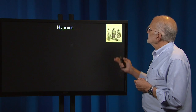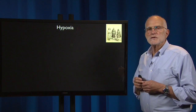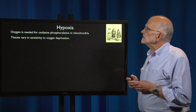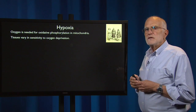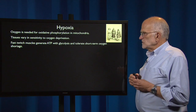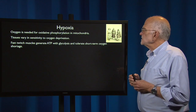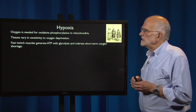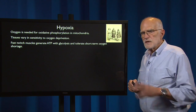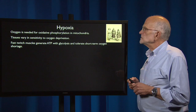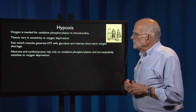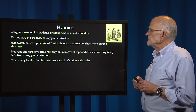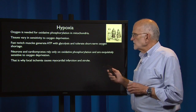What about hypoxia? This is a 19th century image of Tibetans. Oxygen is needed for oxidative phosphorylation in mitochondria. Tissues vary in their sensitivity to oxygen deprivation. Our fast twitch muscles generate ATP with glycolysis and they tolerate short term oxygen shortage — which is why in the 100 meter dash, sprinters actually don't need to breathe; they have enough stored up in their muscles to make it through 10 seconds without needing oxygen. Neurons and cardiomyocytes rely only on oxidative phosphorylation and are exquisitely sensitive to oxygen deprivation. That's why local ischemia causes myocardial infarcts and stroke.